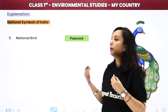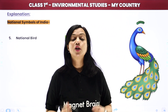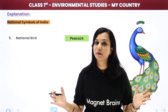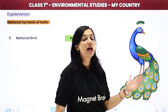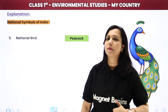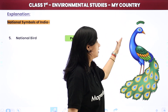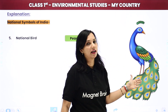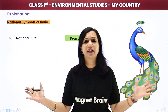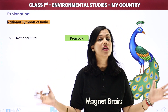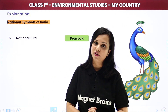National bird - ab national animal ho gaya, toh birds kyun peeche chootein. So children, our national bird is this beautiful peacock. Humari country ka jo rashtriya pakshi hai, uska naam hai Peacock. Peacock kyunki aap dekh sakte ho, peacock mein kitne saare colors hain, aur yeh darshata hai ke India mein bhi bahut saare culture hain, bahut saare colors hain, and that is why India is a beautiful country.